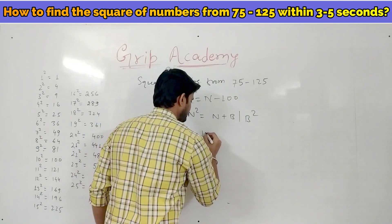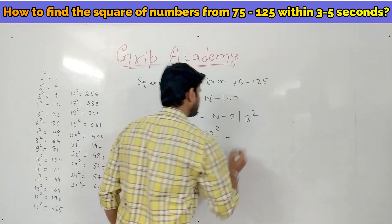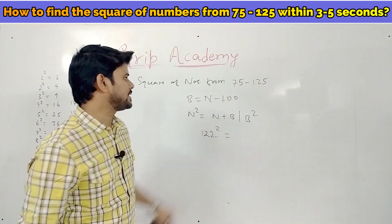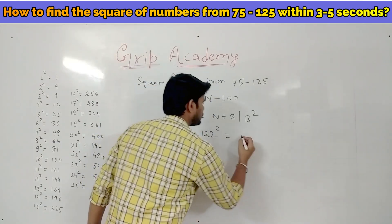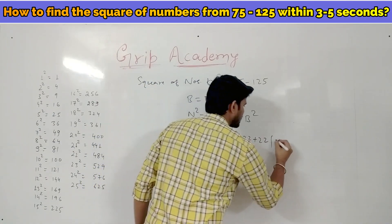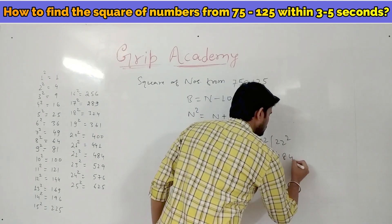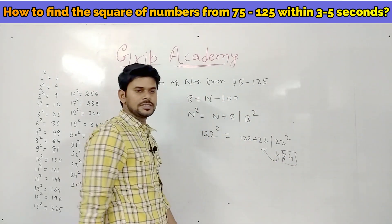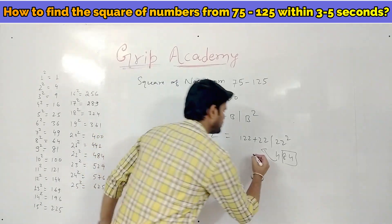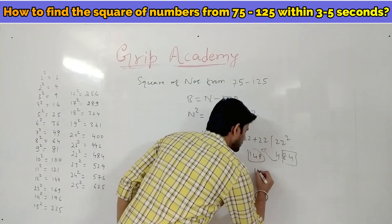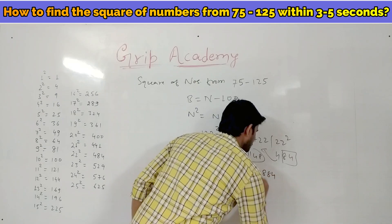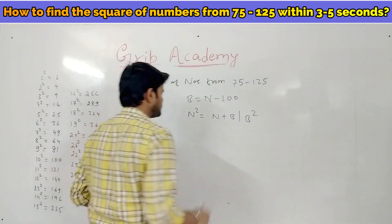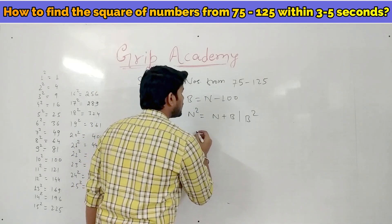Consider you have to find the square of 122. Base is 122 minus 100 equals 22. So 122 plus 22, slash 22 squared. 22 squared is 484, so 84 stays here and 4 is carry. 122 plus 22 is 144, plus carry 4 is 148. So the answer is 14884.